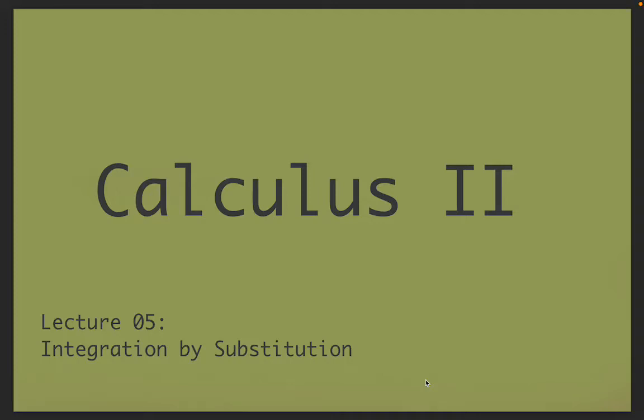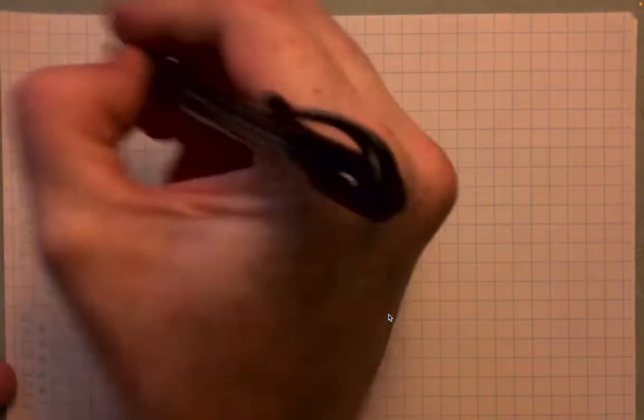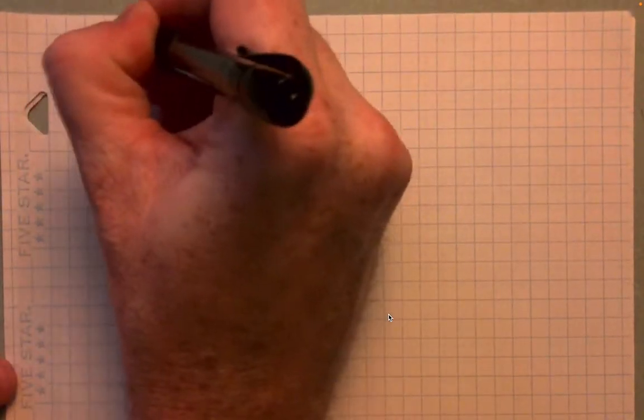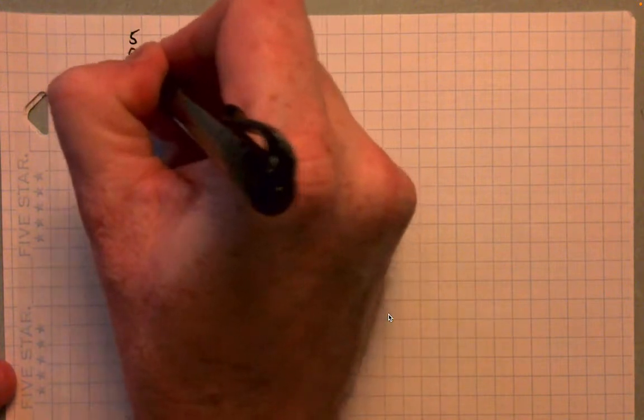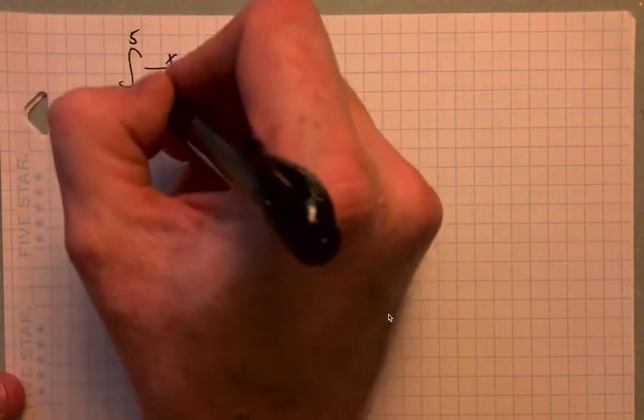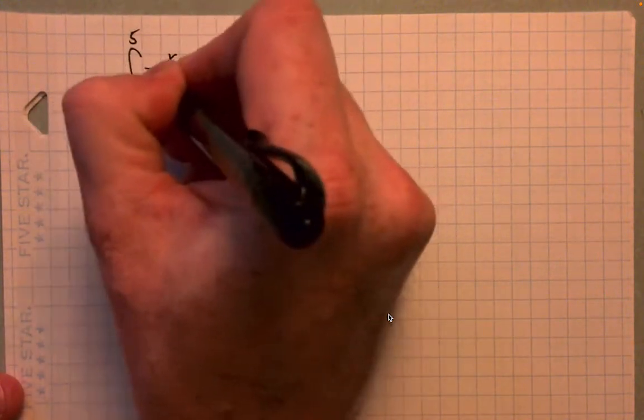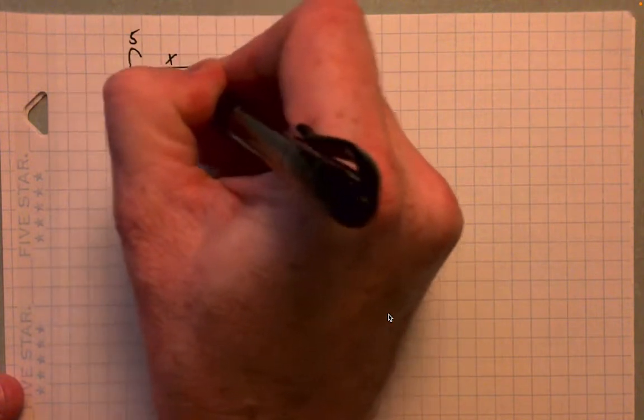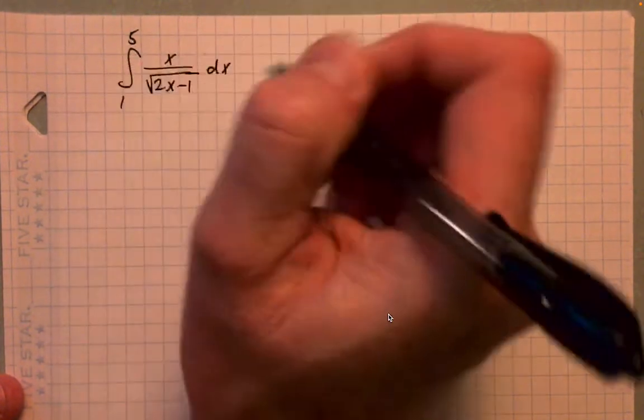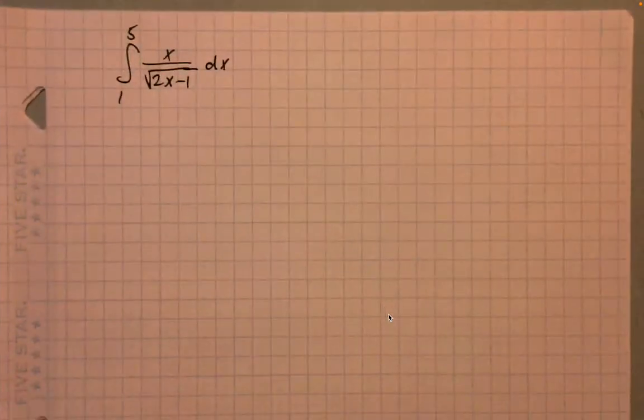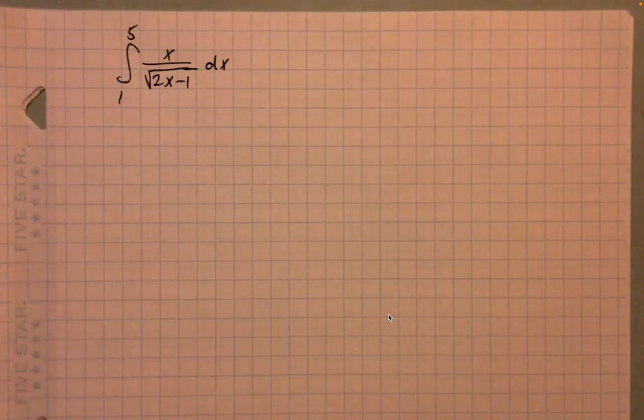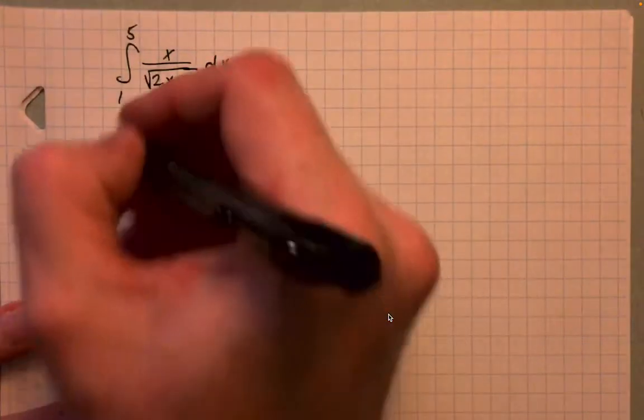Hey everyone, welcome back. This will be part B of lecture 5. I just want to recap the problem we just looked at. So in this problem we were evaluating the integral from 1 to 5 of x divided by the square root of 2x minus 1.